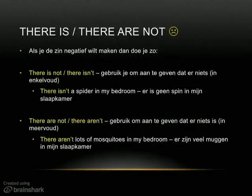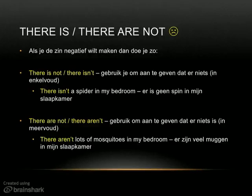If you want to use these sentences in the negative — 'het is niet zo' — then this is how you do it. You say 'there is not' for something in the singular, 'enkelvoud', or 'there isn't' of course. And you can say 'there are not' or 'there aren't' for the plural, 'meervoud'. So: there isn't a spider in my bedroom, there aren't lots of mosquitoes in my bedroom.